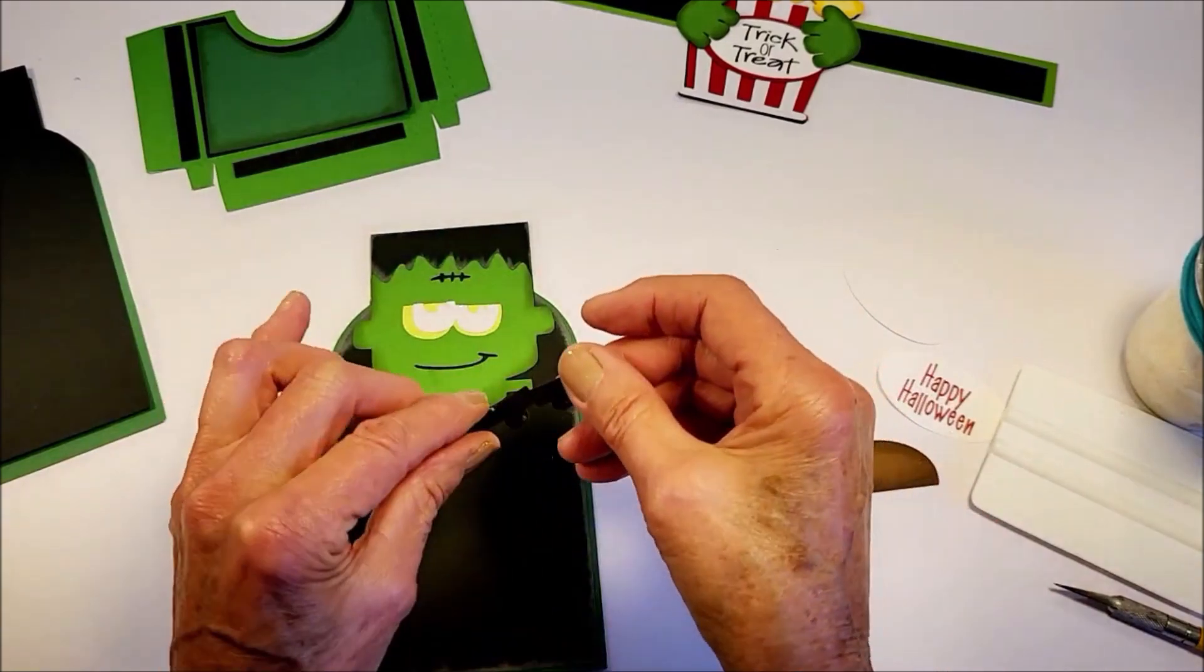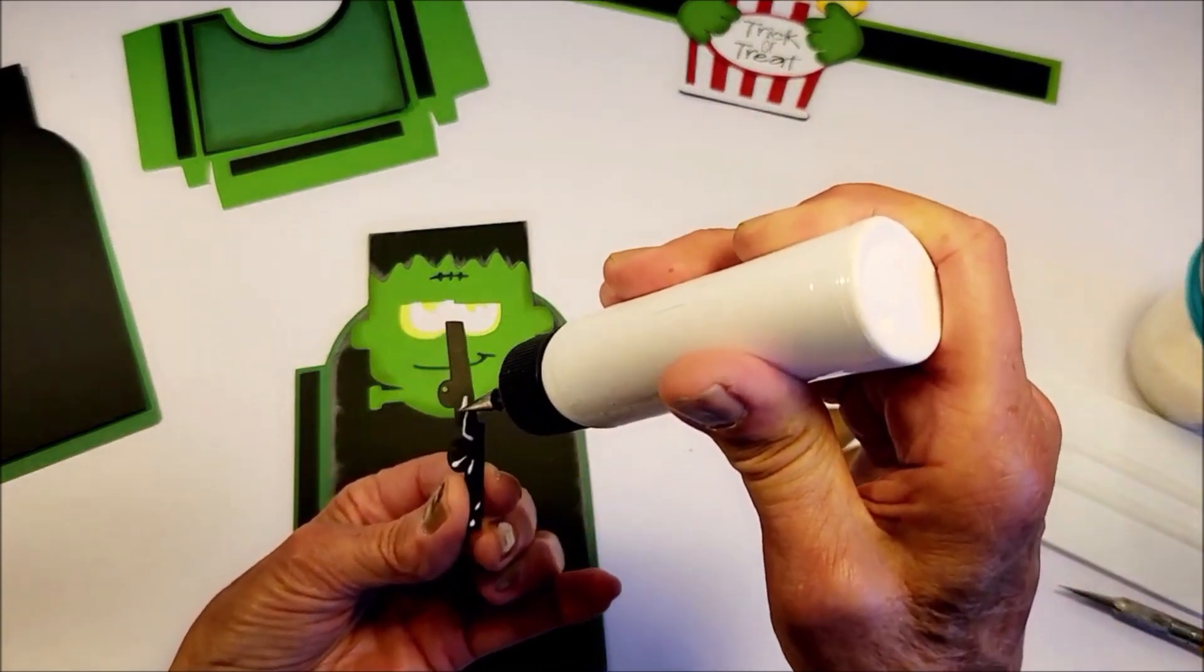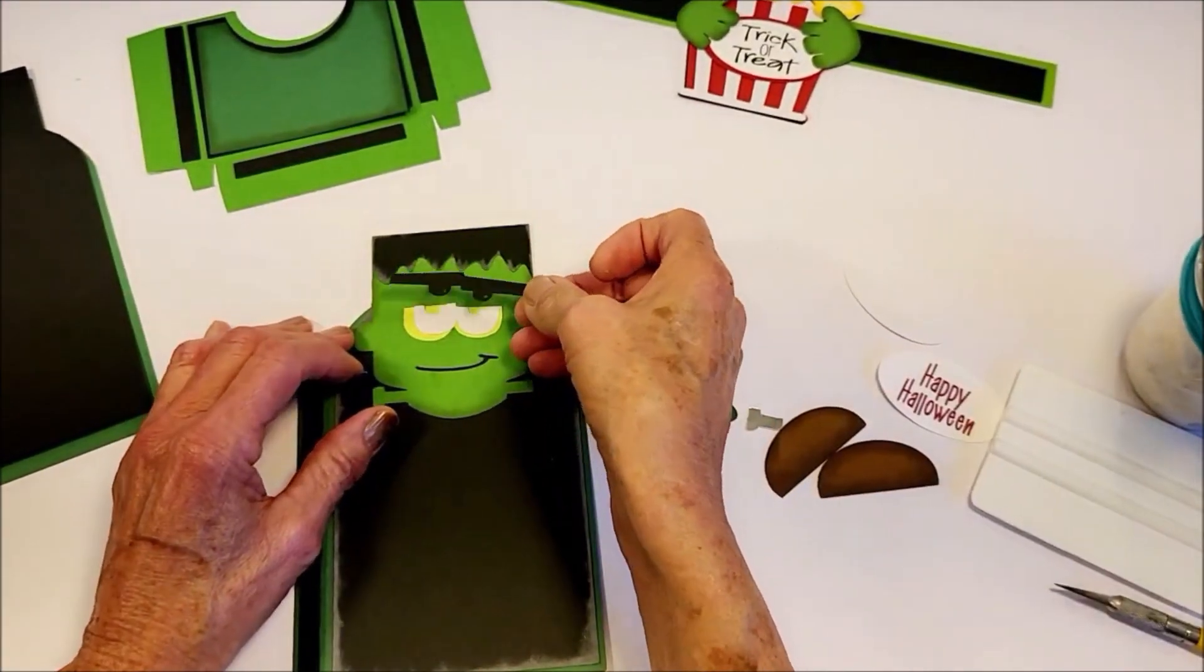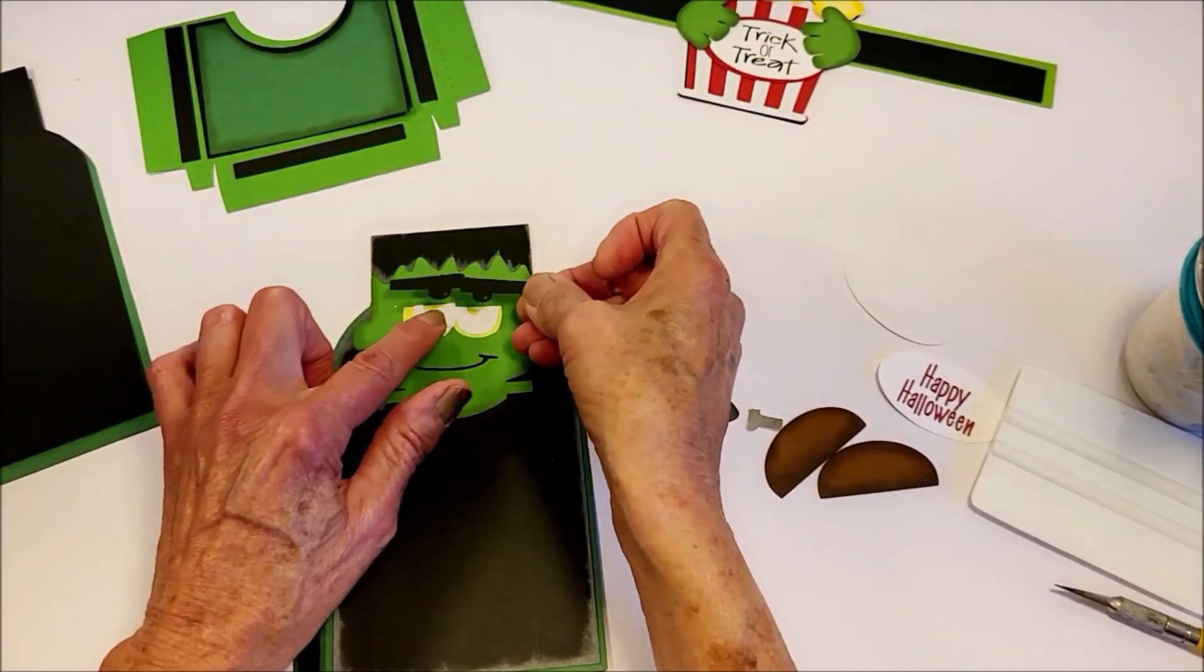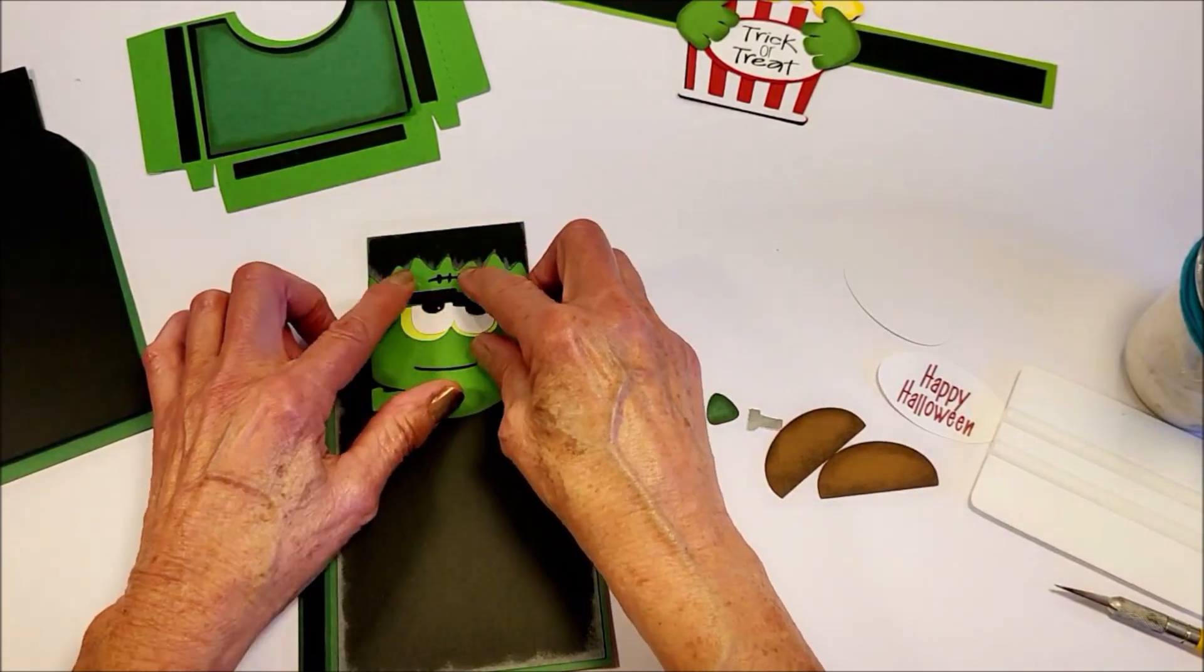And then his brows and his little eyeballs. I'll line that up so that the eyeballs themselves will kind of go in again like a puzzle piece on part of there.